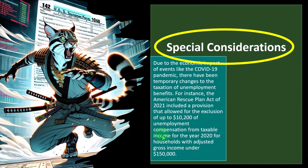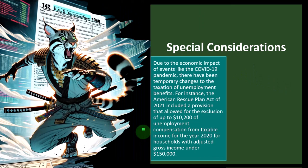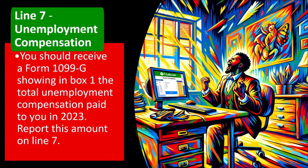Special considerations: due to COVID-19, the American Rescue Plan Act of 2021 included a provision allowing exclusion of up to $10,200 of unemployment compensation from taxable income for 2020 for households with adjusted gross income under $150,000. It's crucial to stay informed about temporary changes or relief measures related to unemployment compensation taxation, as these can significantly impact tax liability.